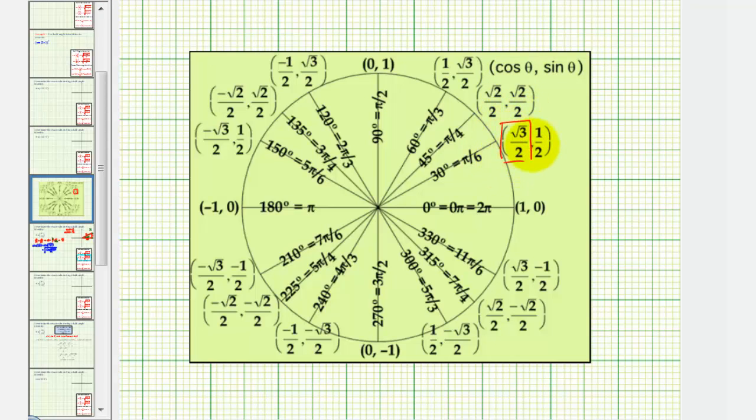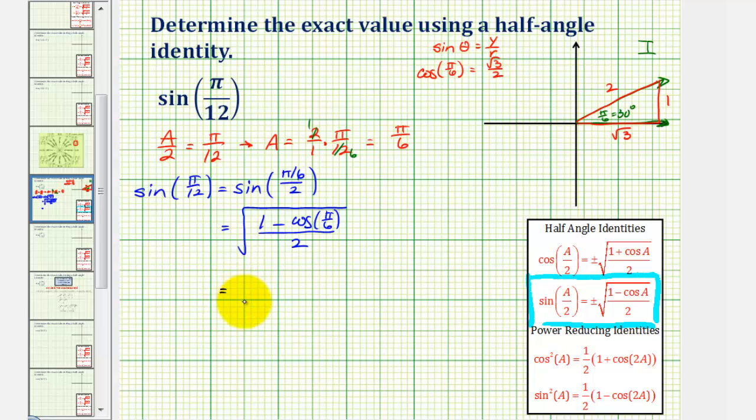Which means we now have the square root of one minus square root three divided by two, all over two. Now let's simplify this.